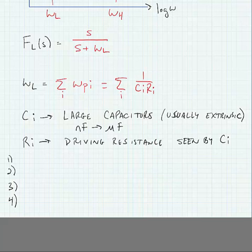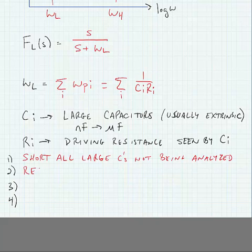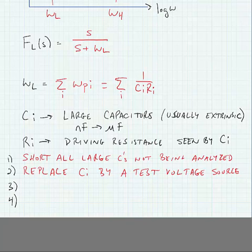So, in our open circuit time constant analysis, what we're going to do is we're going to short all large capacitors that aren't being analyzed. We're going to replace the C being analyzed, in other words, CI, by a test voltage source. We're going to measure the current that flows from that test voltage source to figure out what RI is.